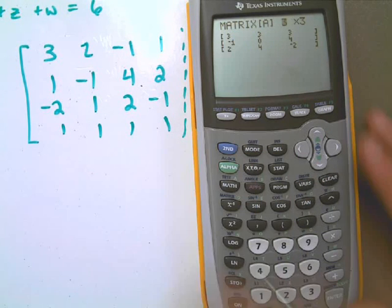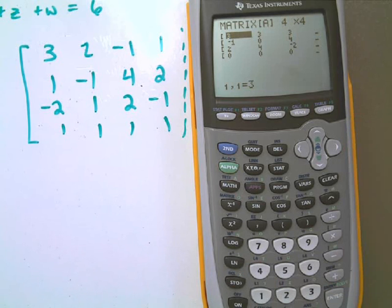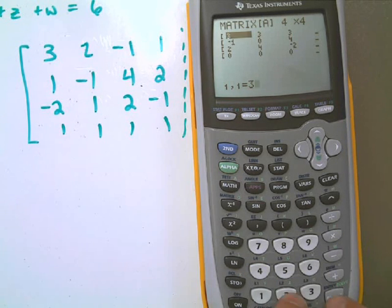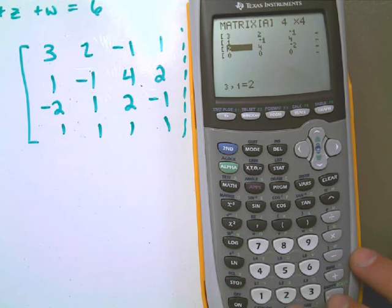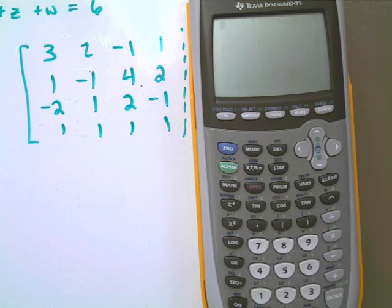Okay, this is from the last video. I need to make this a four by four matrix. Okay, so there's my four by four matrix, and I need to simply enter those values in. So three, two, negative one, one, one, negative one, four, two, negative two, one, two, negative one, and one, one, one, one. So there's my four by four matrix entered in. Second, quit. Get out of it.